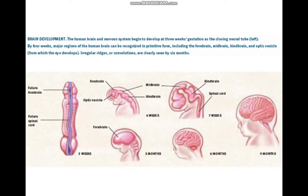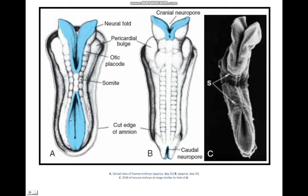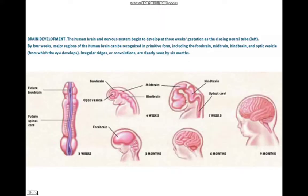In the third week of intrauterine life, there appears a thickening at the mid-dorsal region of the embryo, known as the neural plate. This neural plate then becomes a groove-like structure known as the neural groove — a slipper-shaped structure. The lateral edges of the neural groove then combine together to give rise to a tube-like structure known as the neural tube, which is your future brain and spinal cord. Initially the neural tube is open on both ends at the anterior neuropore and the posterior neuropore.